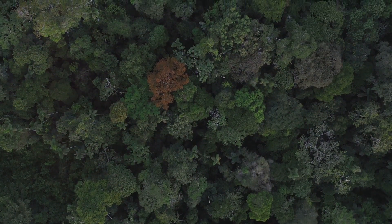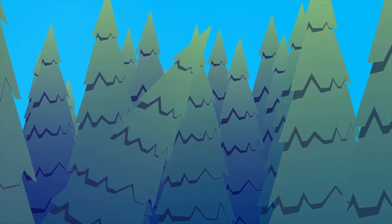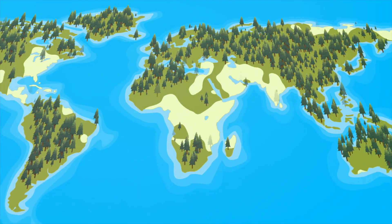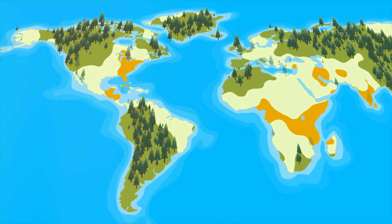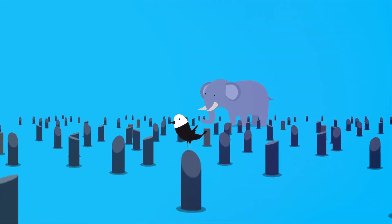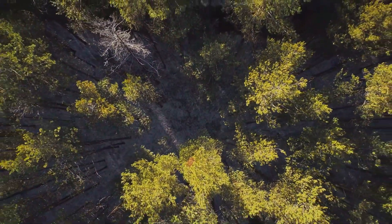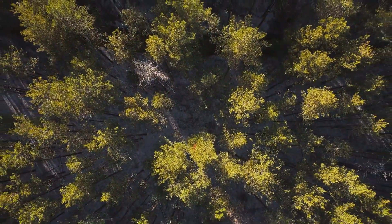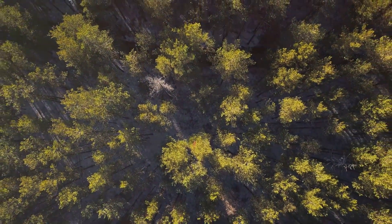The direct impact is, of course, habitat loss. This can lead to species extinction, especially for those species that are endemic to certain forests. But the effects of deforestation go beyond that. The indirect impacts include changes in climate and weather patterns, which can further threaten biodiversity.